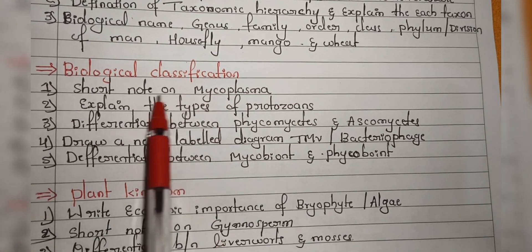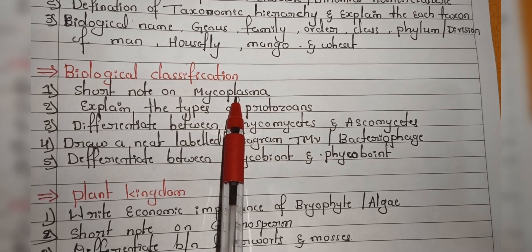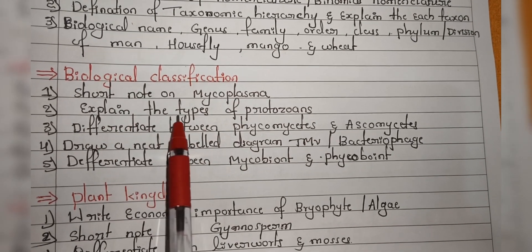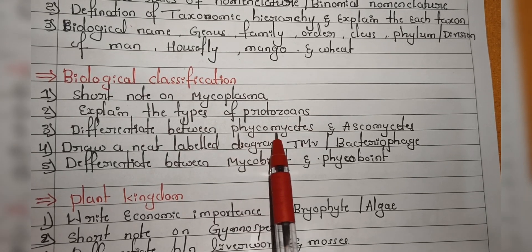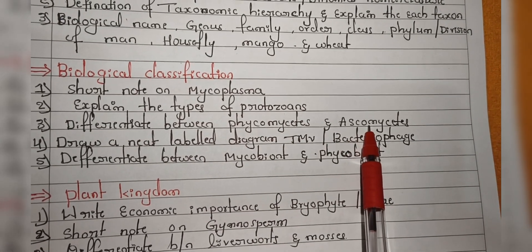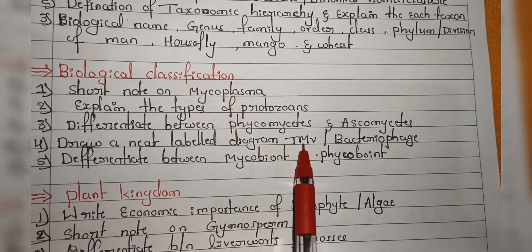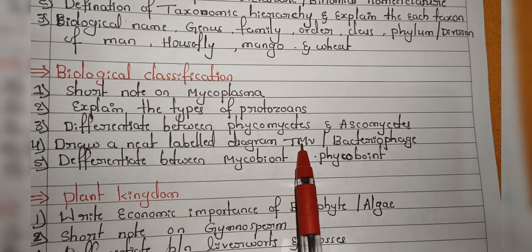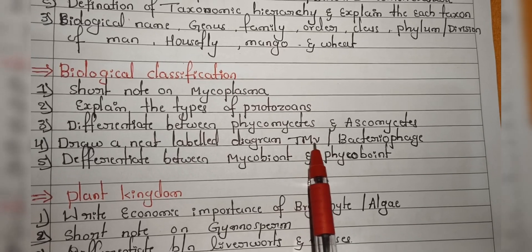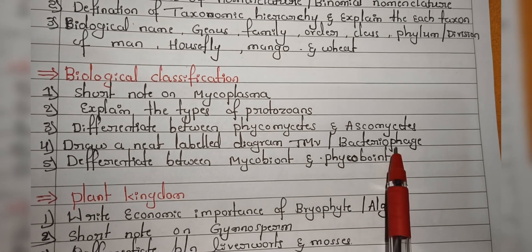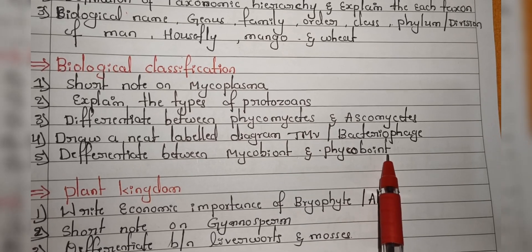From Biological Classification, they will ask questions on mycoplasma — write a short note on mycoplasma. Next, they will ask questions on types of protozoans. Next, differentiate between phycomycetes and ascomycetes. For diagrams, they will ask one out of two compulsory — either TMV or bacteriophage. Next is differentiate between mycobiont and phycobiont.